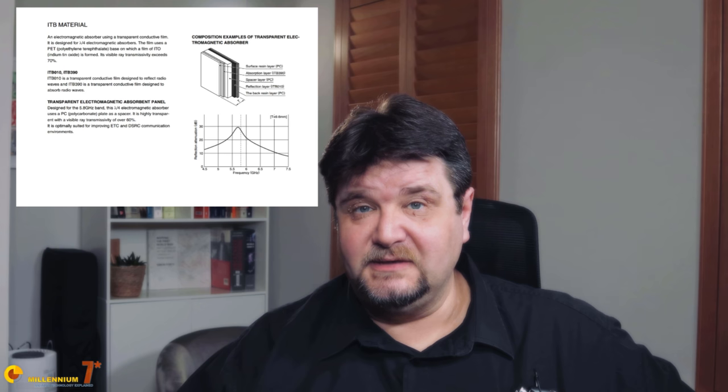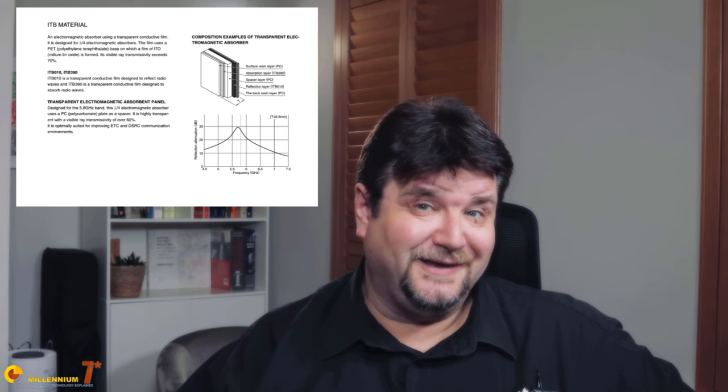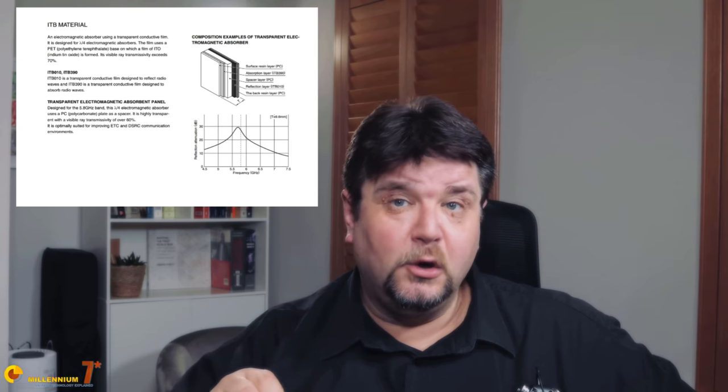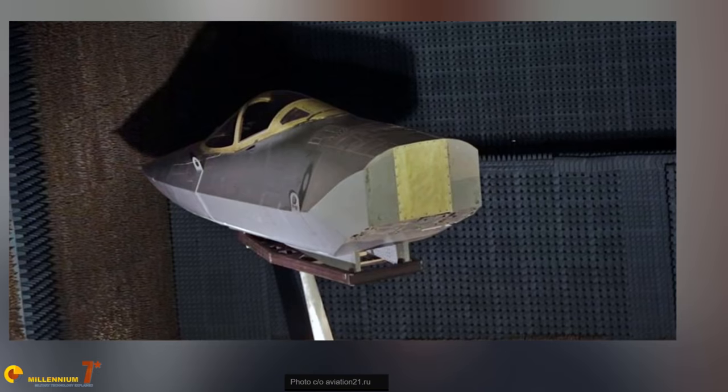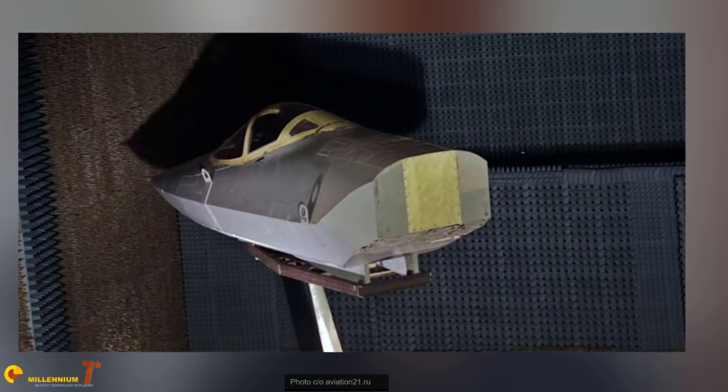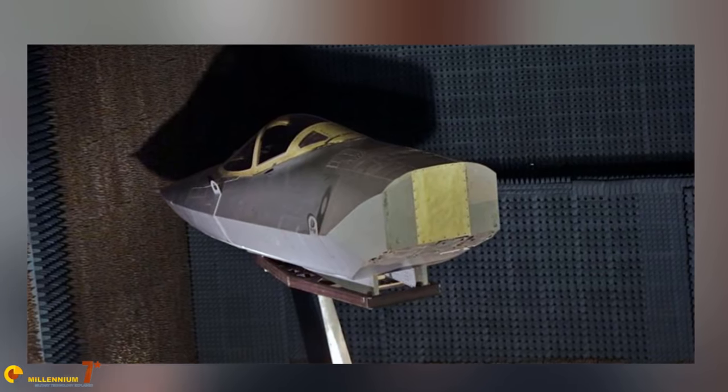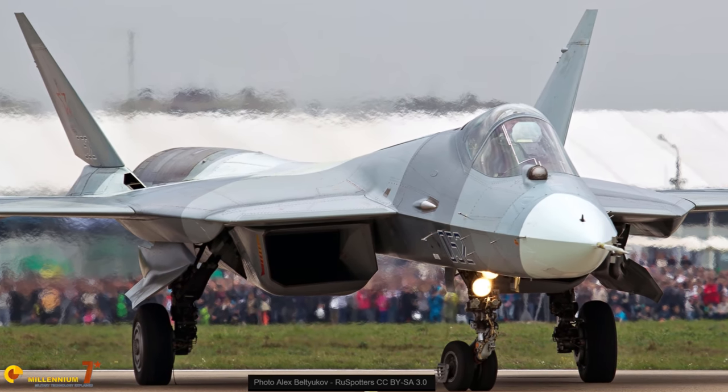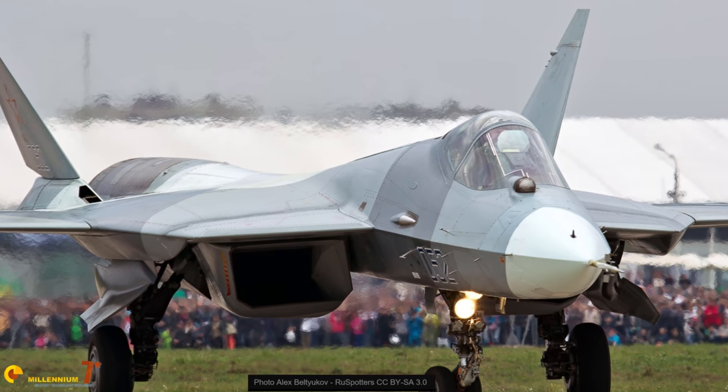These transparent radar-absorbing materials are generally based on a polymeric plastic matrix with inclusions of rare metal oxides. Since they are thin and transparent, they can't be designed to absorb a wide range of frequencies — they tend to be tuned to a particular frequency, which is connected to the size and shape of the metal oxide particles. To avoid this limitation, more than one layer may be added. For example, the Sukhoi Su-57 has no fewer than 10 layers of radar-absorbing material, each tuned to a different frequency, with the cumulative effect of achieving absorption across a wider range of frequencies.